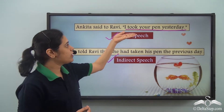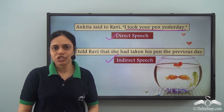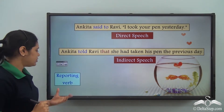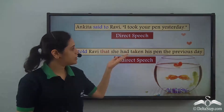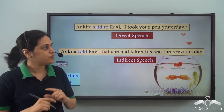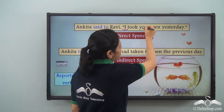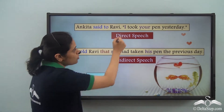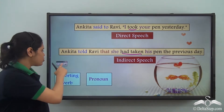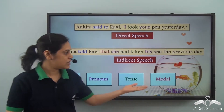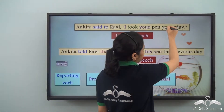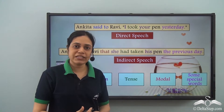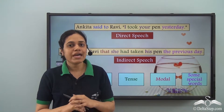When we convert a sentence from direct speech to indirect speech, certain things change. Like 'said to' becomes 'told' — the reporting verb changes. The inverted commas are removed and 'that' is added. Also, 'I' becomes 'she' and 'your' becomes 'his' — the pronouns inside the quotations change. 'Took' becomes 'had taken', so the tense changes. Also, 'yesterday' becomes 'the previous day' — special words indicating time or place also change.